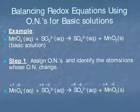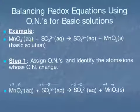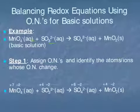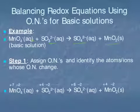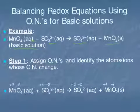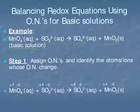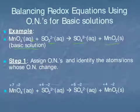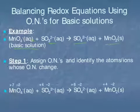Our example here is the reaction of permanganate with sulfite to yield sulfate and MnO₂ in the basic solution. Step 1 is similar to our balancing in acidic conditions, where we assign oxidation numbers and then identify which atoms or ions have oxidation numbers that change.